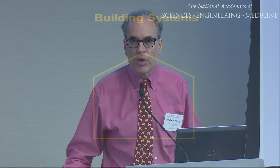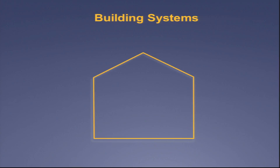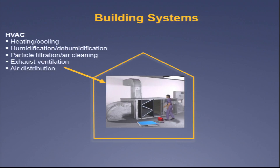So, building systems — what are the building systems that we care about? Some of my colleagues who think about indoor air look at buildings as just a box, a nondescript box, which really bugs me. There are HVAC systems — heating, ventilating, and air conditioning. They heat and cool buildings, humidify and dehumidify maybe. Some have filters to remove particles from outdoor air that comes in or the air that's recirculated, exhaust ventilation to remove moisture and odors from bathrooms, and air distribution systems.